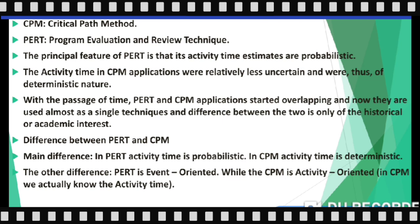In CPM applications, the activity times are relatively more certain and thus are deterministic in nature. In CPM, we know about the finishing time of different activities — that's why their time estimates are deterministic. This is the main difference between CPM and PERT: in PERT, activity time estimates are probabilistic and uncertain, but in CPM they are deterministic.